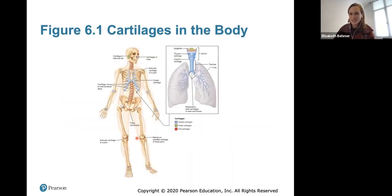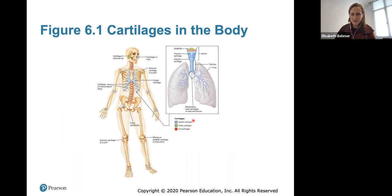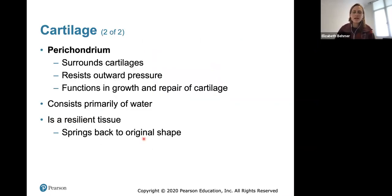Here's a look at the different types of cartilage and where they're found throughout the body. Elastic cartilage is found in your external ear and epiglottis. Hyaline cartilage is found in your costal cartilage and articular cartilage of your joints. Fibrocartilage is found as intervertebral discs and the menisci — the pad-like discs between the bones in your knee. The perichondrium surrounds cartilages, resists outward pressure, and functions in growth and repair of cartilage.